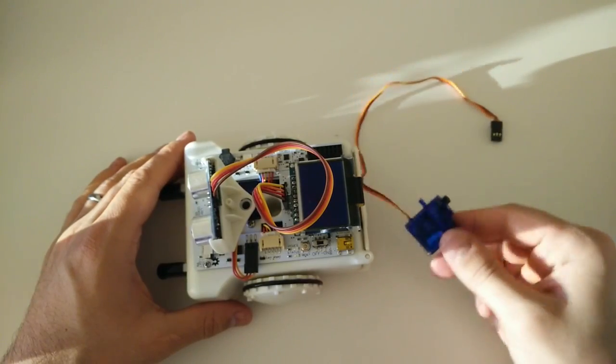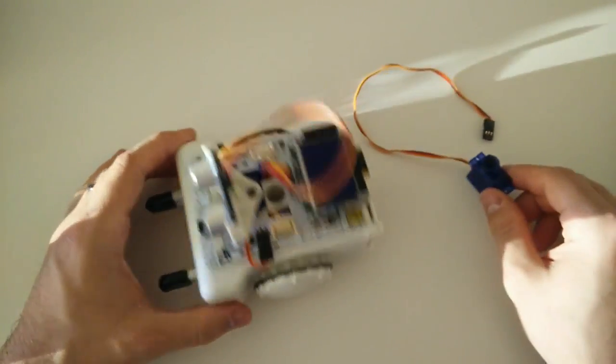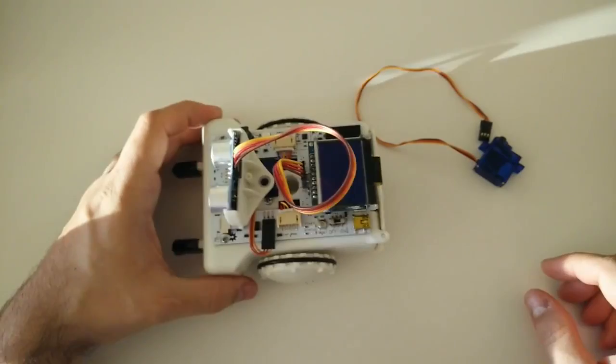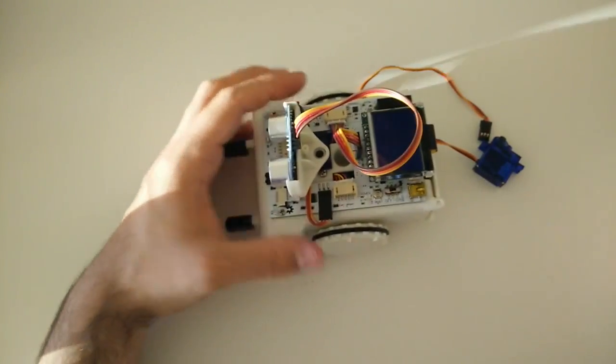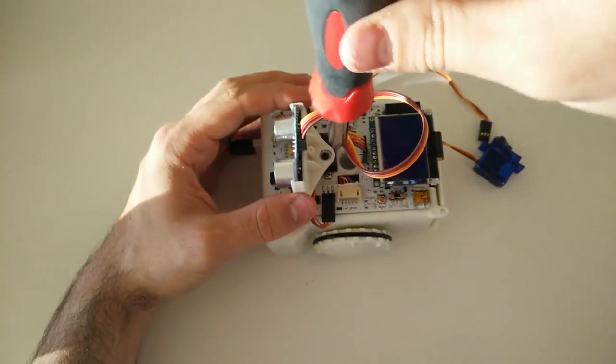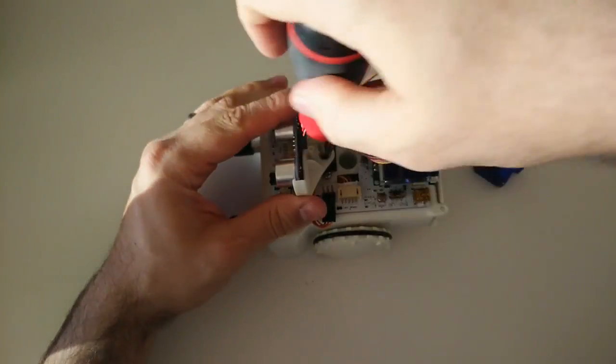This tutorial is on how to replace the servo inside of your Sparky with a new one. First, we're going to remove the head, making sure that we keep the head facing forward as straight as possible.